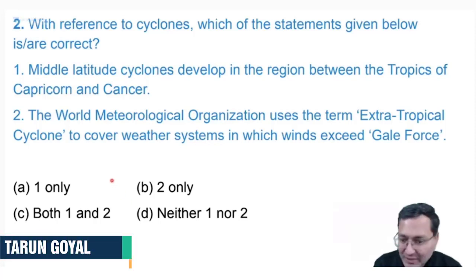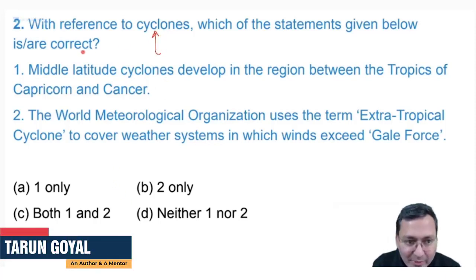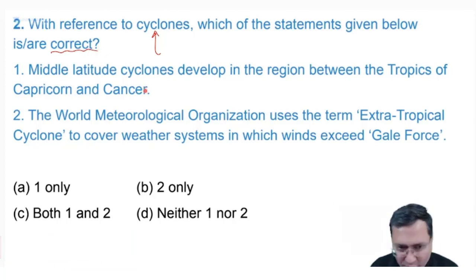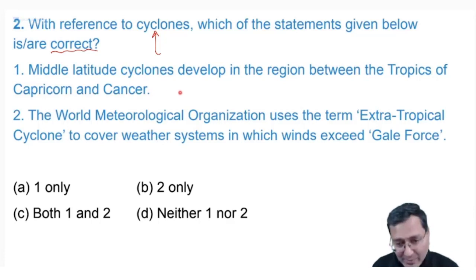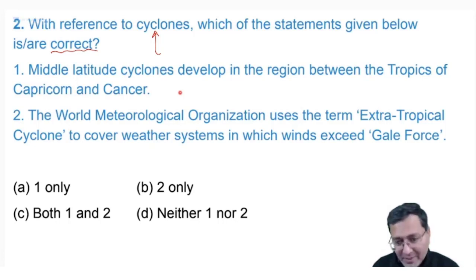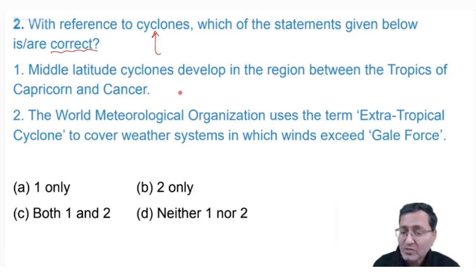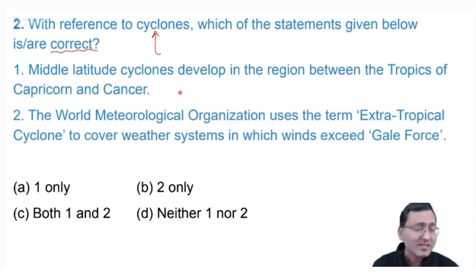We are looking at the cyclone-related question and looking for the correct statements. When it comes to cyclones, there are two types: the basic classification is tropical cyclones and temperate cyclones. The name itself says it all.